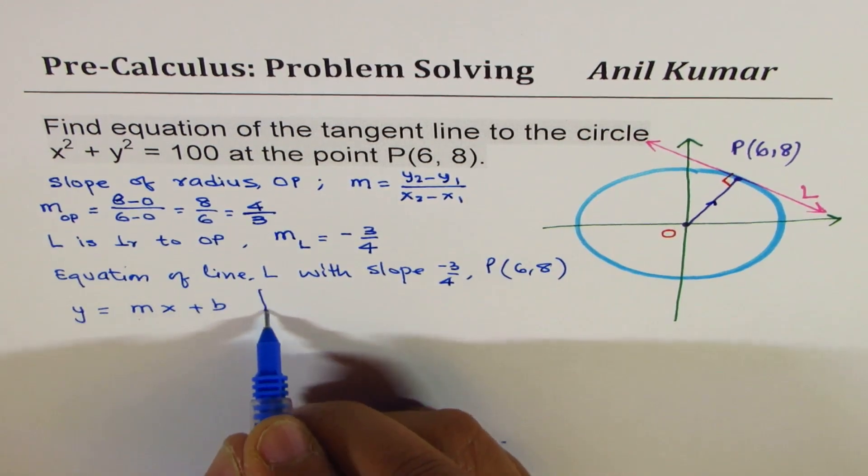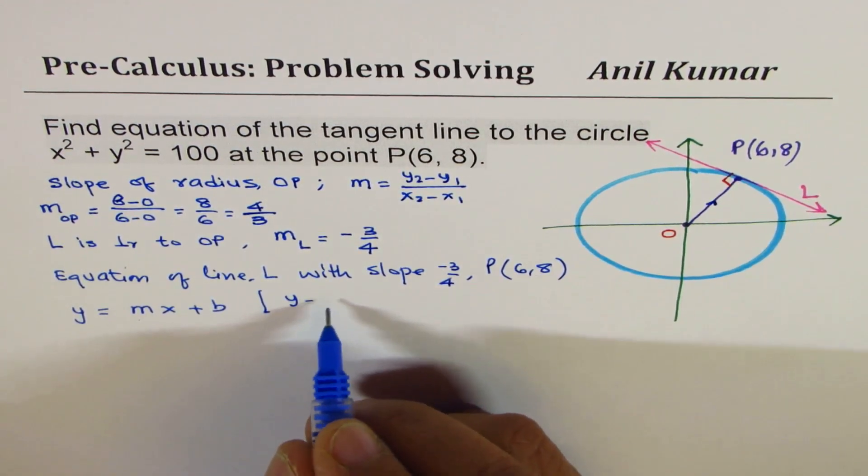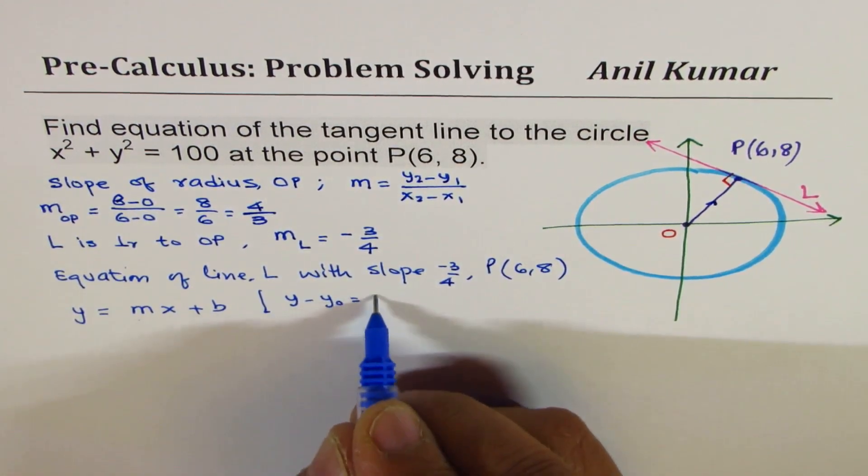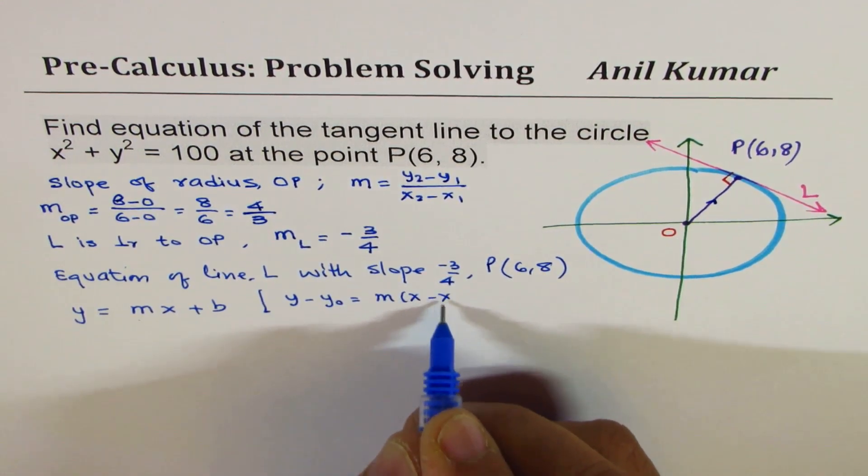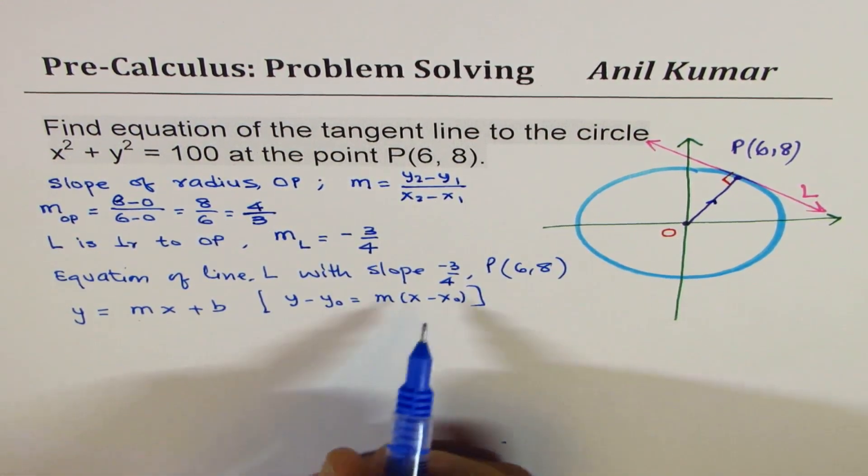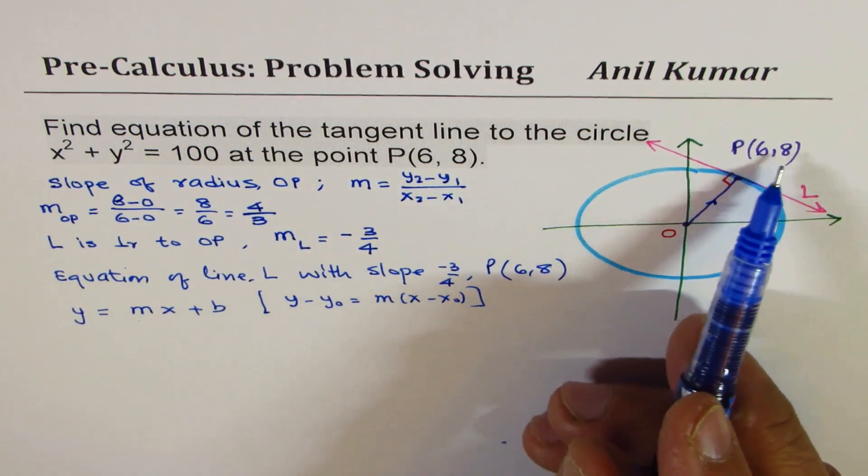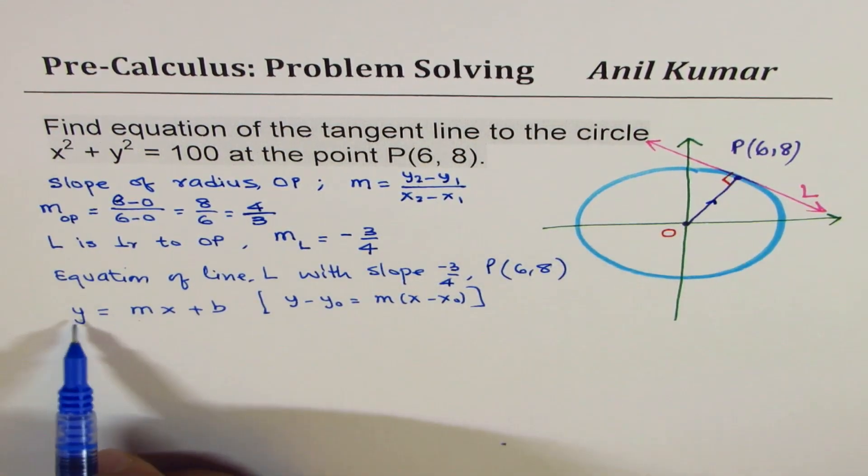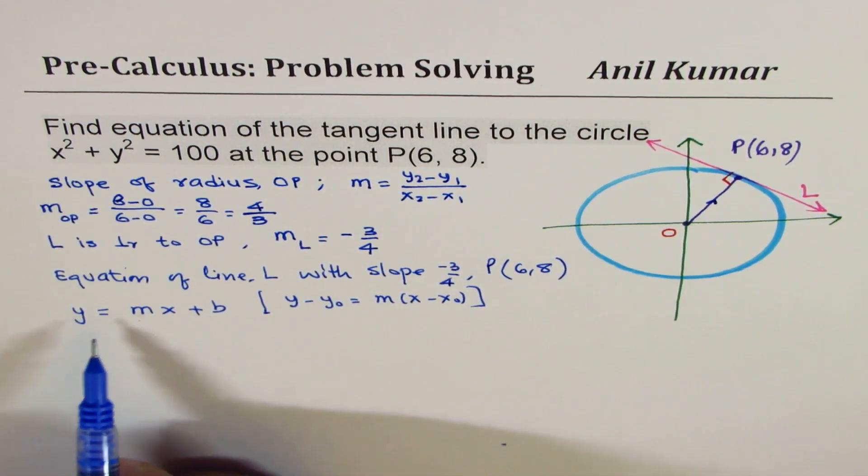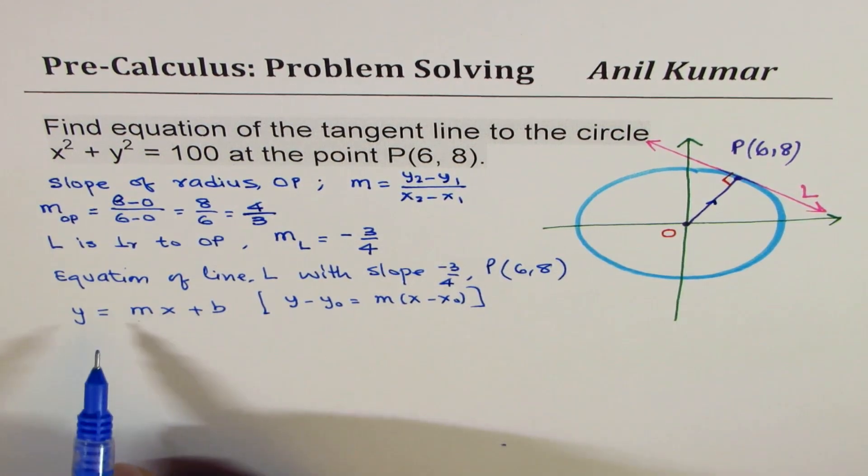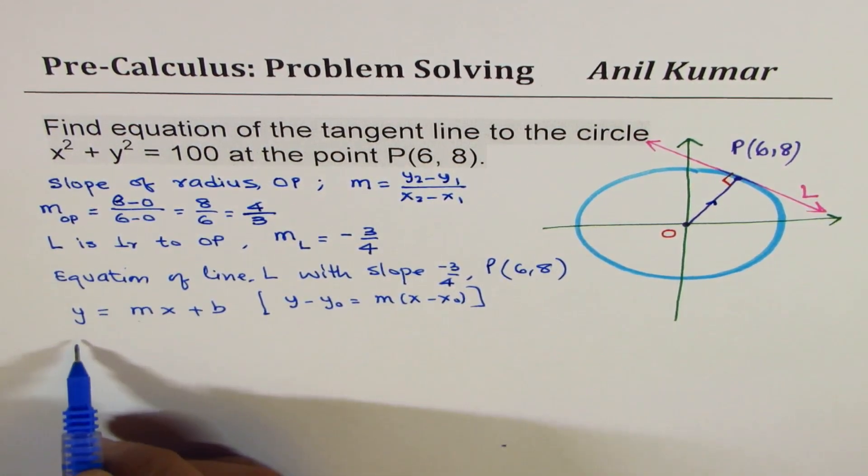So you could use any of the formulas which you have learned. Most of my students are familiar with y equals mx plus b, so I will use this one. You could also use the alternate formula, which is y minus y₀ equals m times x minus x₀. Where y₀, x₀ is the given point.